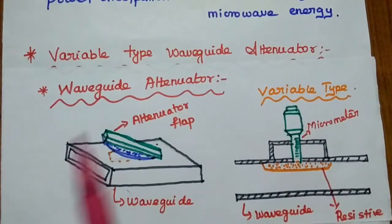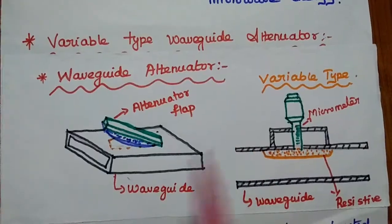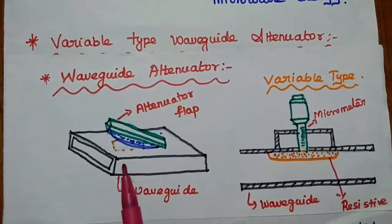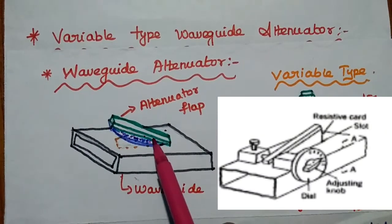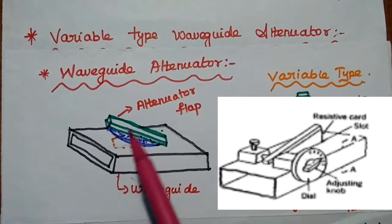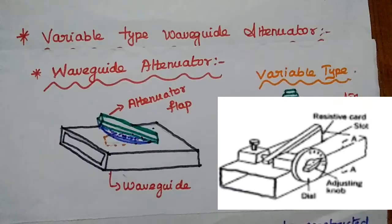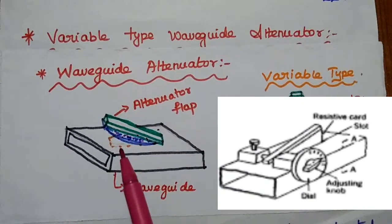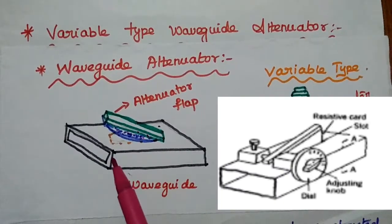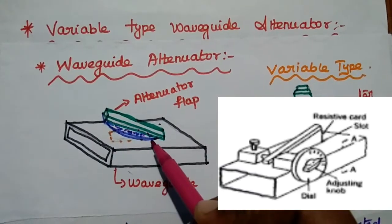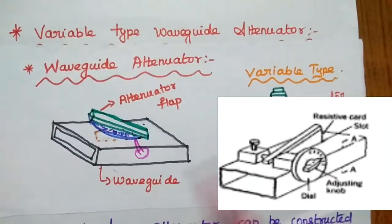Next we discuss variable type waveguide attenuators. In this method, we use an attenuator flap which has some resistive or lossy material. By inserting this flap inside the waveguide, we can produce some attenuation. Based on the depth of insertion, we can control the attenuation. This lossy material absorbs some of the energy from the incoming signal. We insert it using a rotating knob, and by increasing insertion we increase the attenuation based on our application.